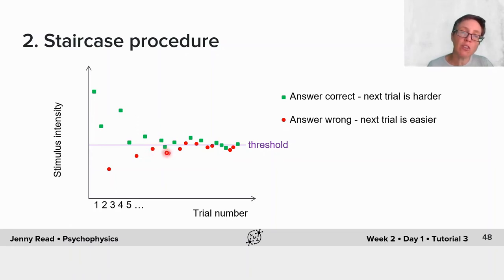Then we start making it harder until they make another mistake, and then we reverse again. You can see that these steps, the changes, are reducing with time. The idea is that we're gradually homing in on this threshold, going up and down, like walking up and down a staircase around the threshold value.